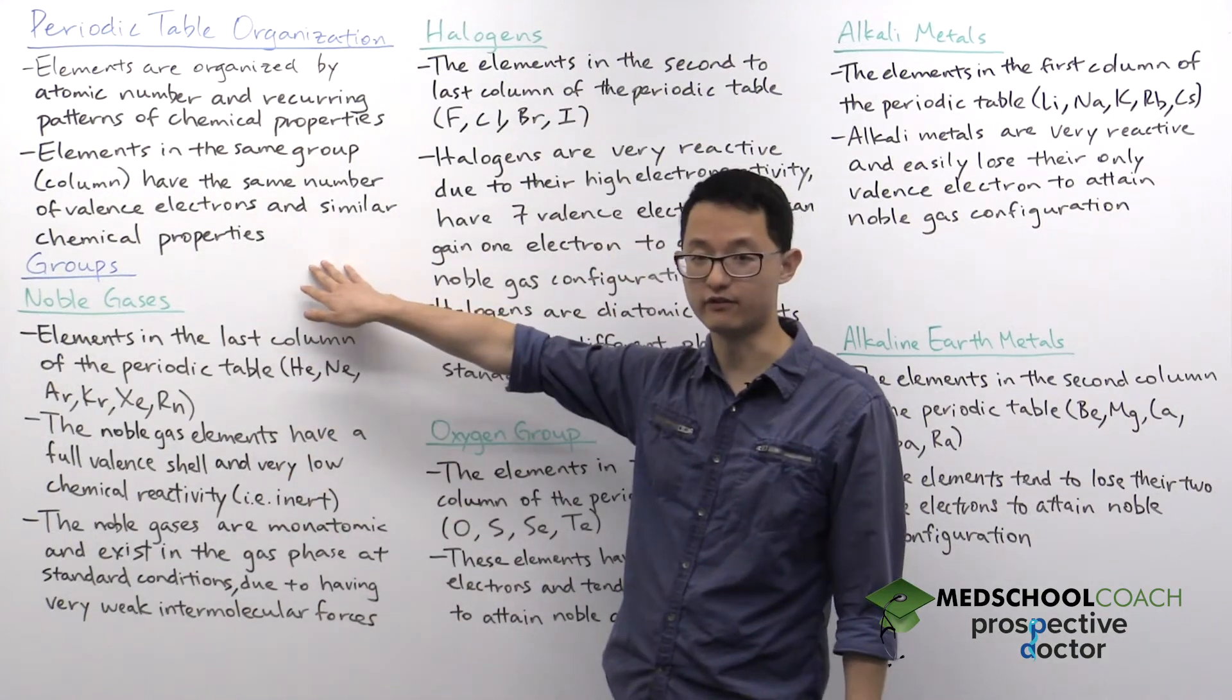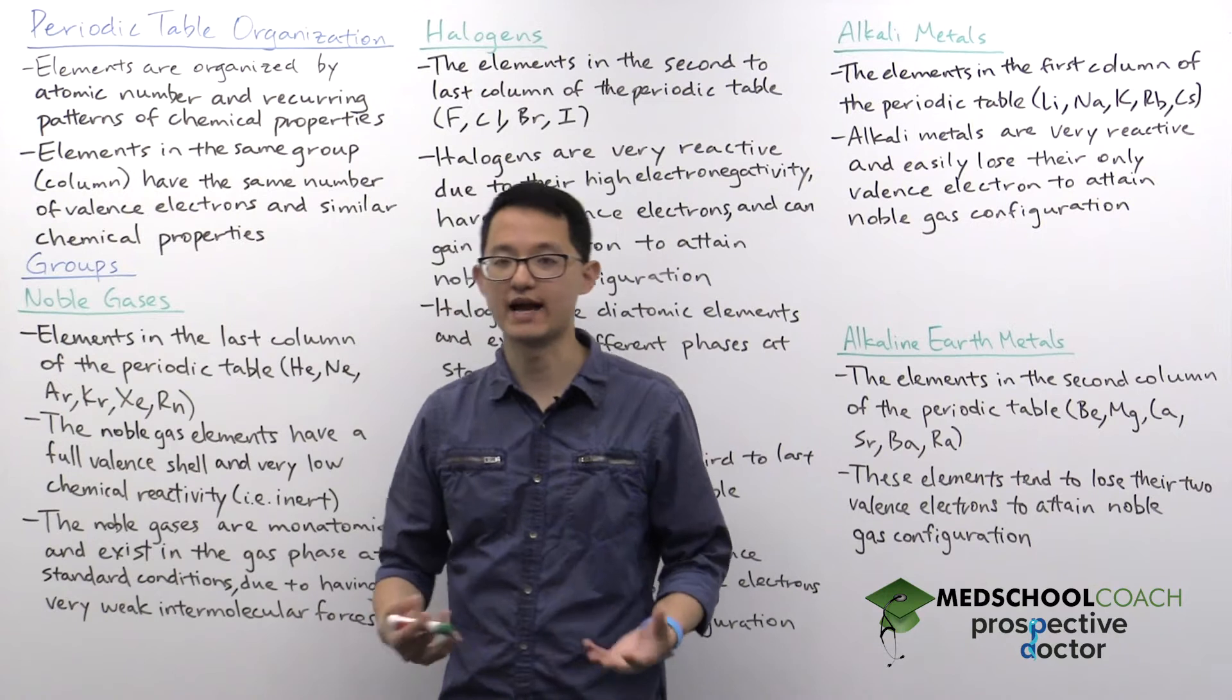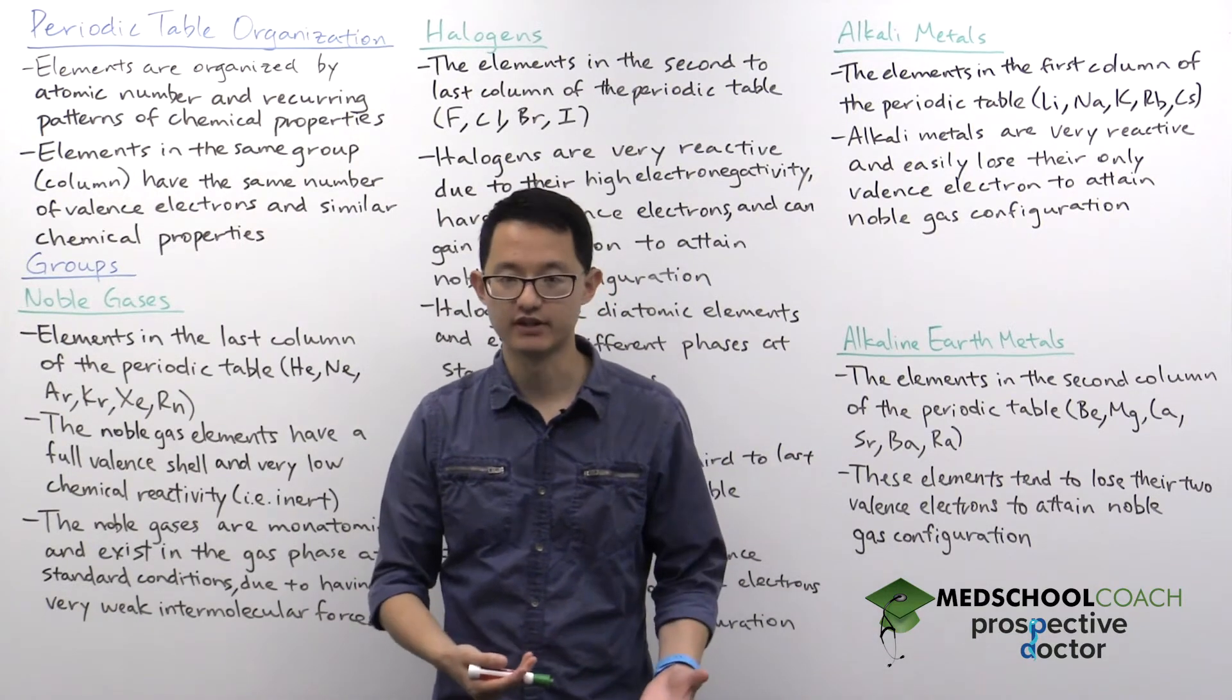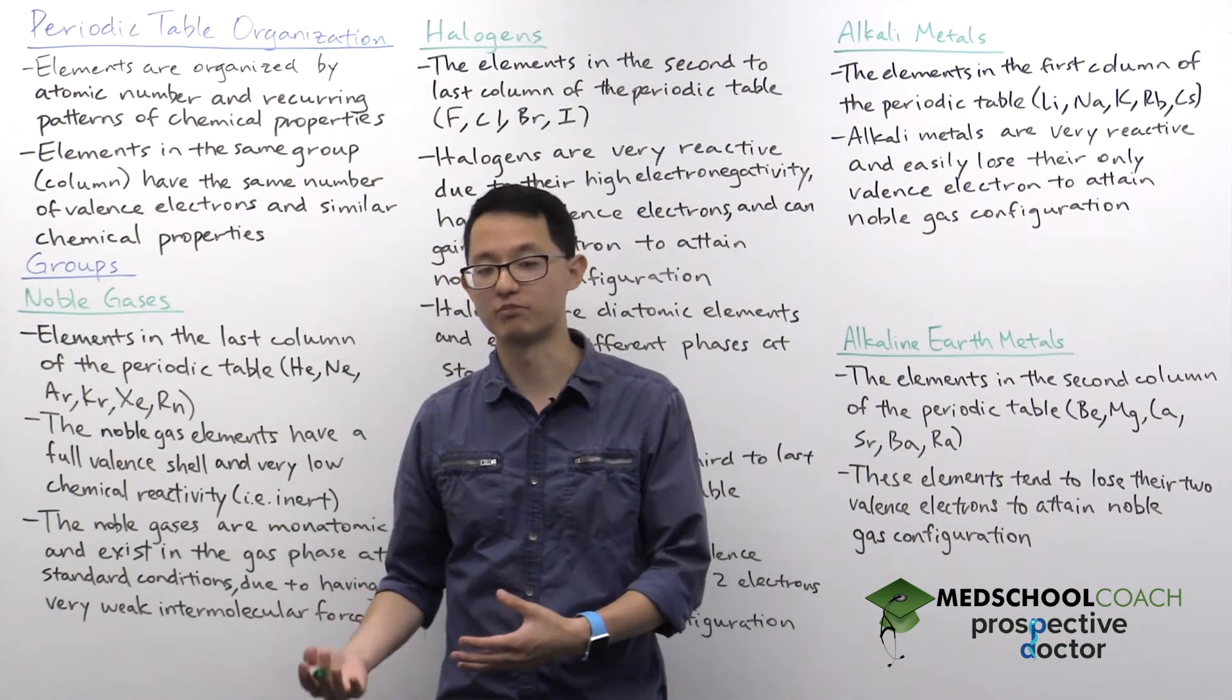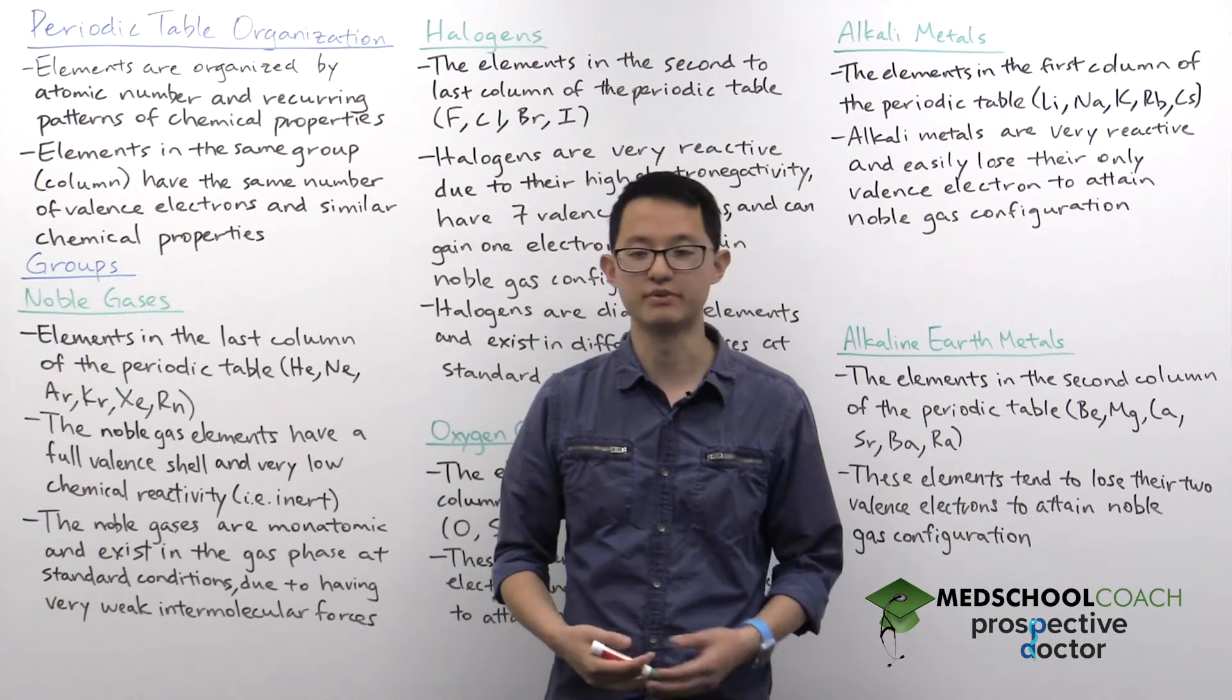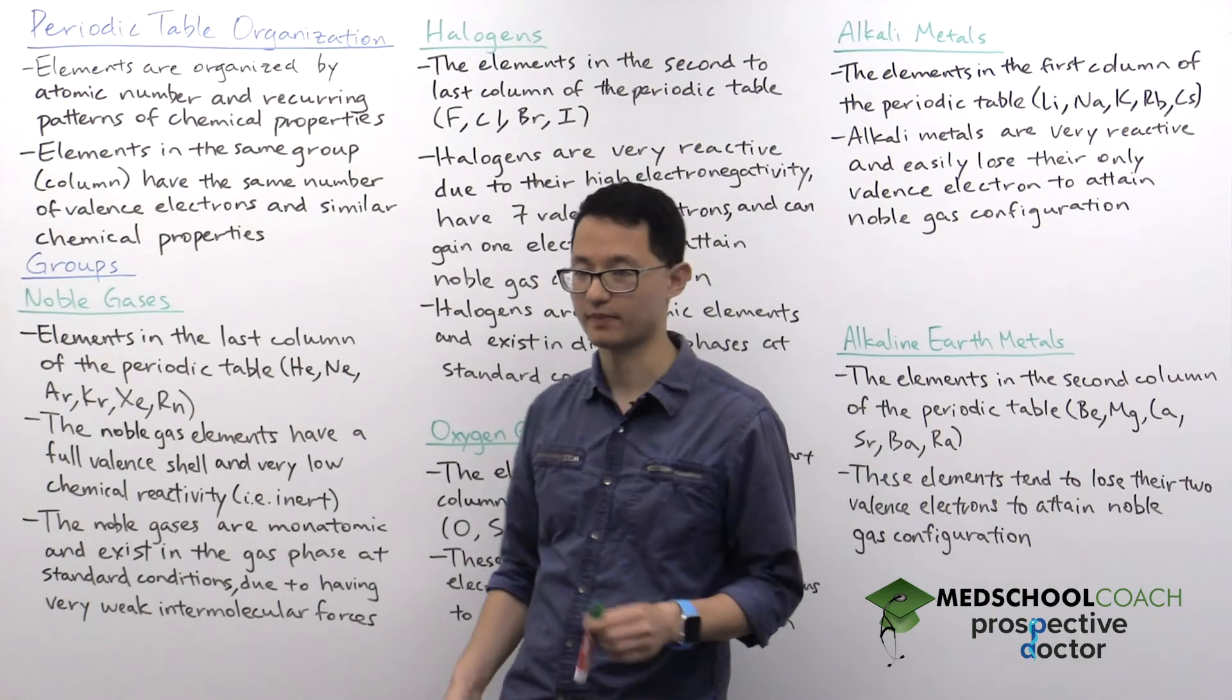And this is actually really helpful to keep in mind for the MCAT, because often, if they have a question asking which of the following elements could be substituted for this element, or which of the following elements would have a similar property as this element, the answer is almost always going to be whatever element is also in the same column.